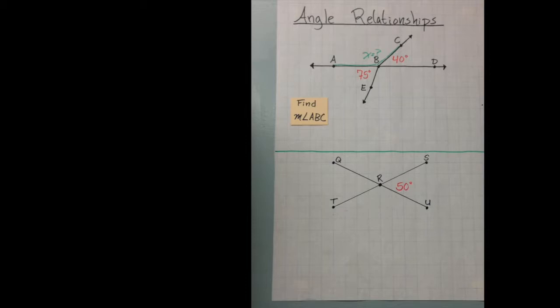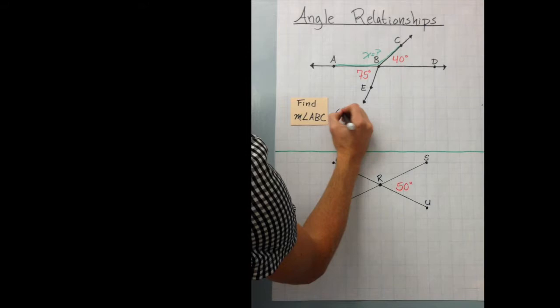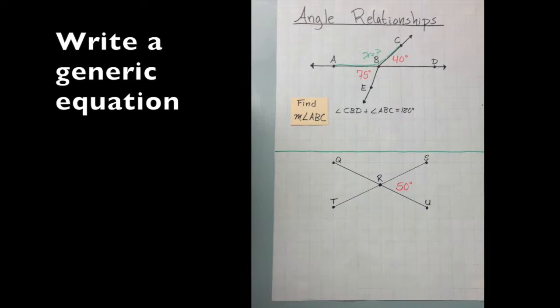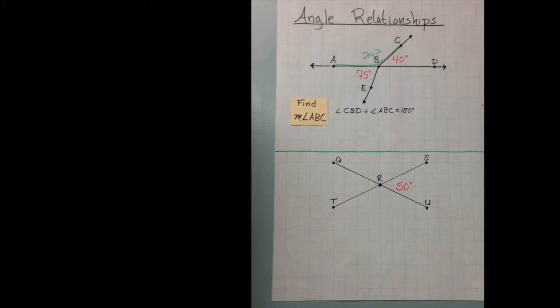How many degrees are in a straight line? If you said 180, you would be correct. So check it out. We know that angle CBD right here plus ABC equals 180 degrees. We know that. So really all we have to do is substitute in our variable in our degrees.